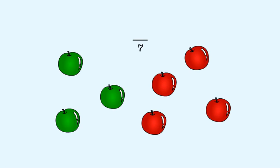The parts are each of the apples. Three of the apples are green, so the numerator is three. So three-sevenths of the apples are green.